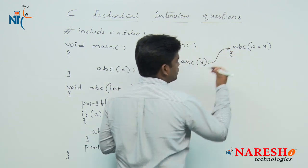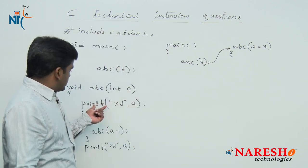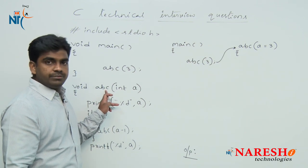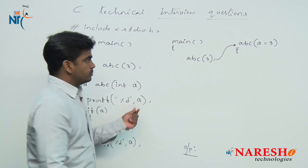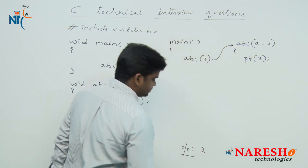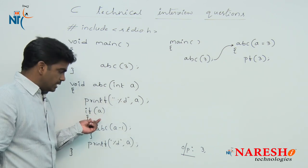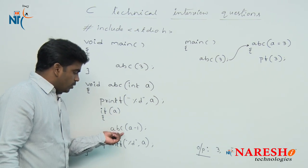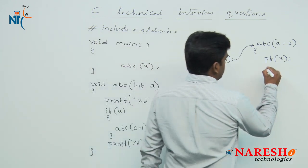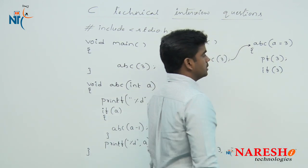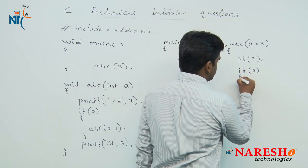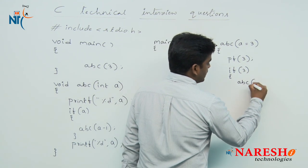Now execution of the abc function begins. The first statement is printing the value of a. So in the output, it will print 3. Next, it checks the condition: if a is true, we call abc with a minus 1. Here a is 3 — is the condition true or false? It is true, because in C language all values except 0 — both positive and negative — are considered true. So abc is called passing a minus 1, which is 2.